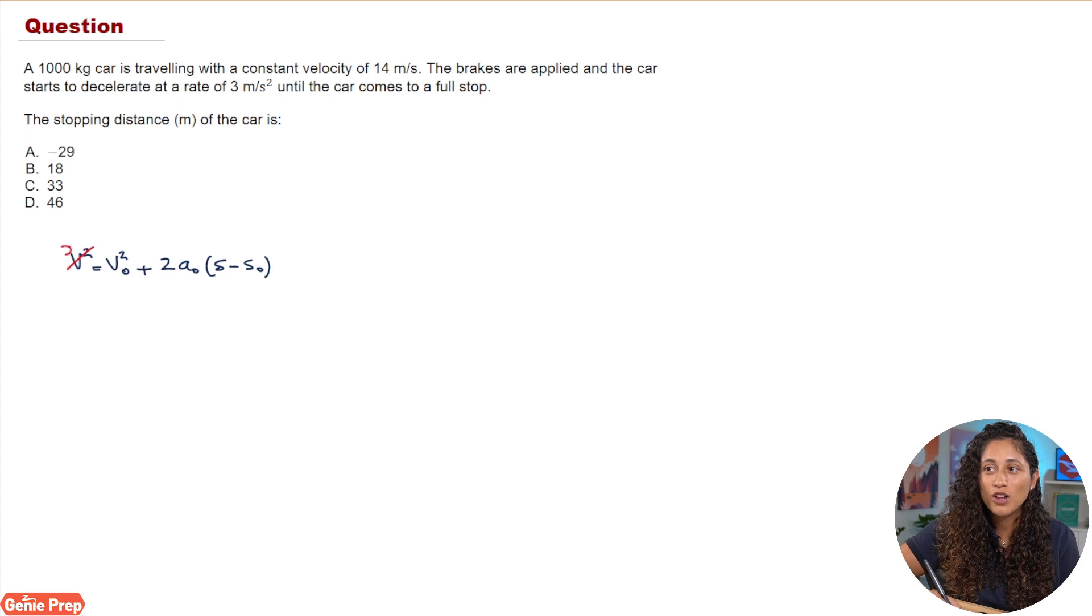So let's go ahead and write the equation down. As we mentioned before, the final velocity is going to be zero because at the end the car comes to a full stop. The initial velocity was given as 14 meters per second. Now the acceleration is going to be minus three. Be careful guys, don't forget the negative. The reason why it's negative is because we are applying the brakes, which means we are decelerating. And then s, that's what we're actually trying to solve for. The initial distance is just going to be zero.